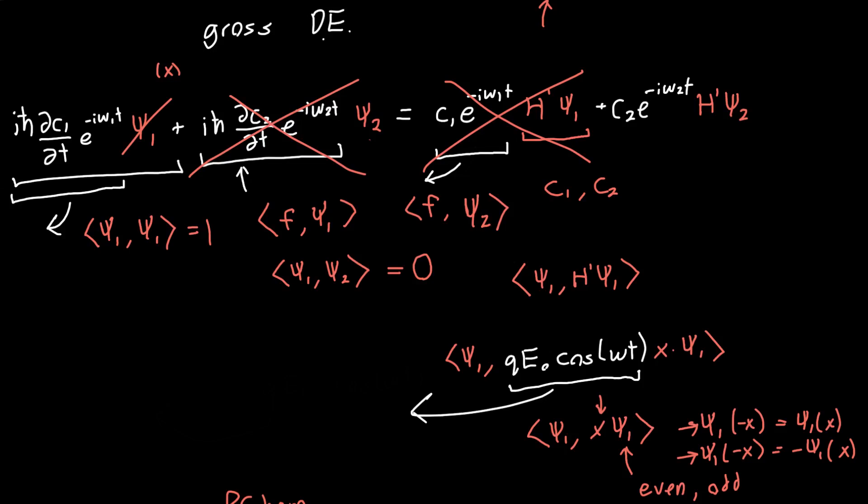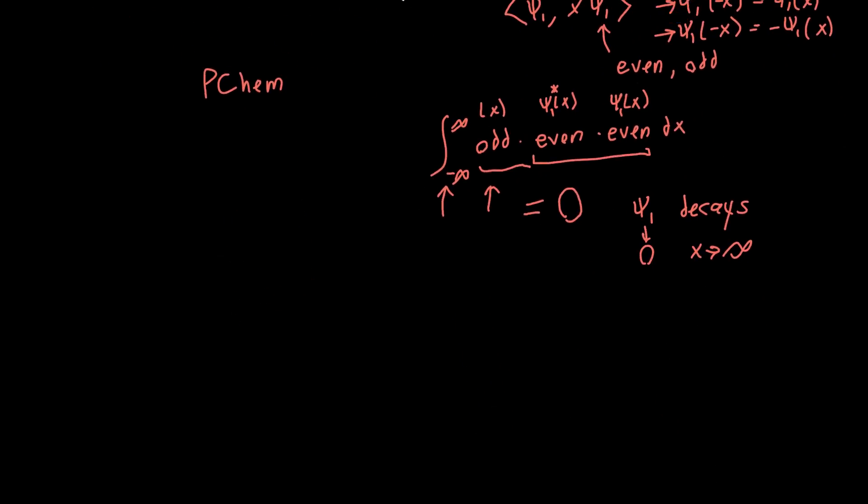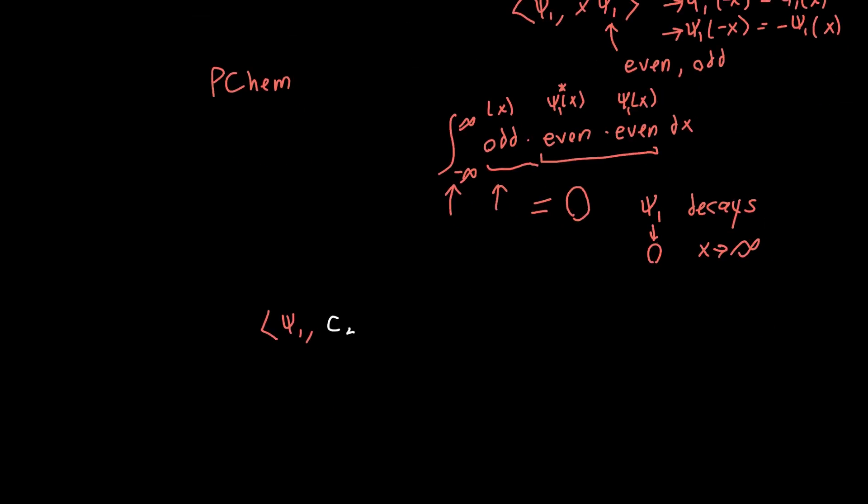Now we only have to deal with two terms. Now we need to figure out what's the inner product of this guy, and this will turn out to be the most formidable by far. We need to take the inner product of psi 1 with c2 e to the minus i omega 2t times the Hamiltonian q e naught cosine omega t times x times psi 2. We can just pull all this white stuff out front, and we're left taking the inner product of psi 1 with x and psi 2. But at this point, we are actually kind of stuck.